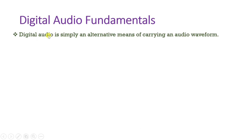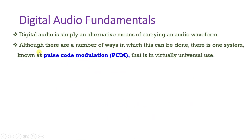Digital Audio is simply an alternative means of carrying an audio waveform. It is not a different thing — it is just a translation of Analog Signal into Digital Data. There are many ways to translate Analog Data into Digital Data, but there is one system known as Pulse Code Modulation, and that is used universally.